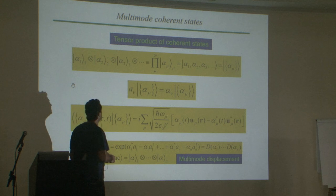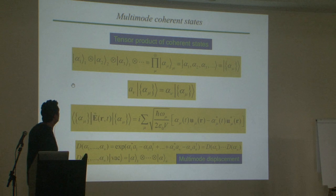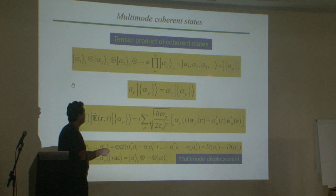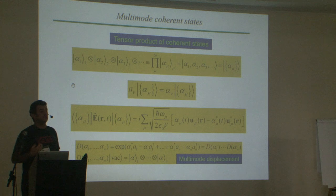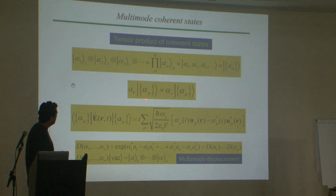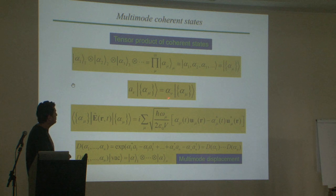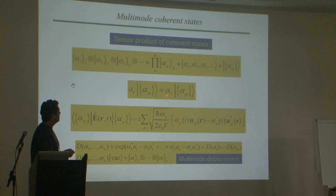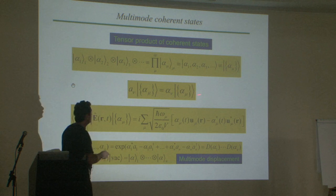What about coherent states? The single-mode coherent state is an eigenvector of the annihilation operator. We can define the multi-mode coherent state as a tensor product of coherent states for all the modes — this is usually the best description of classical sources of light, like a laser beam. They are eigenvectors of the annihilation operator; since the annihilation operator is not Hermitian, its eigenvalue is a complex number, and there is a complex amplitude associated with each coherent state.